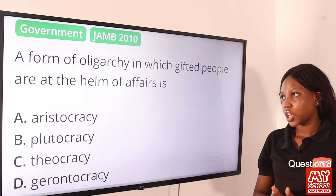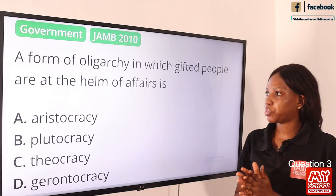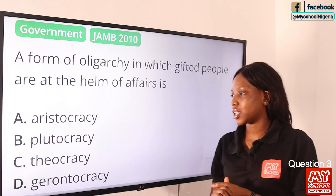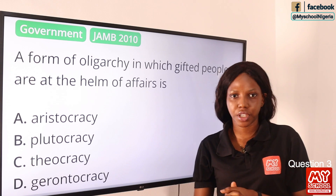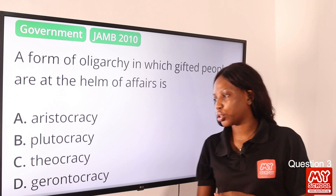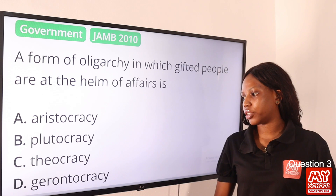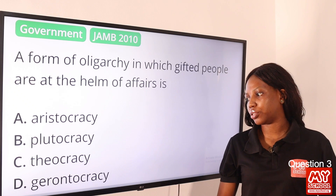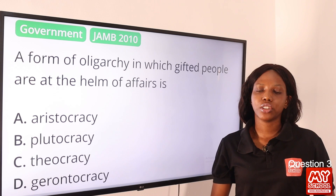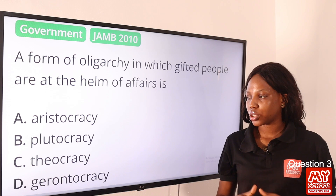Question 3: A form of oligarchy in which gifted people are at the helm of affairs is — option A, aristocracy; option B, plutocracy; option C, theocracy; option D, gerontocracy. The answer to this question is aristocracy.